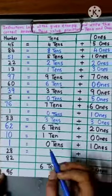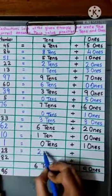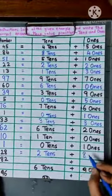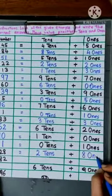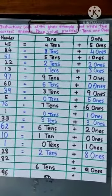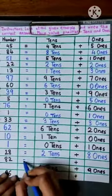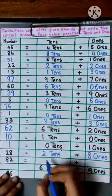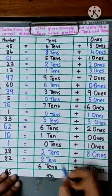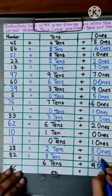We are not going to write 0. Number 28. That means there are 2 tens and 8 ones. Yes. The next number is 82. So in 82 there are 8 tens and 2 ones.